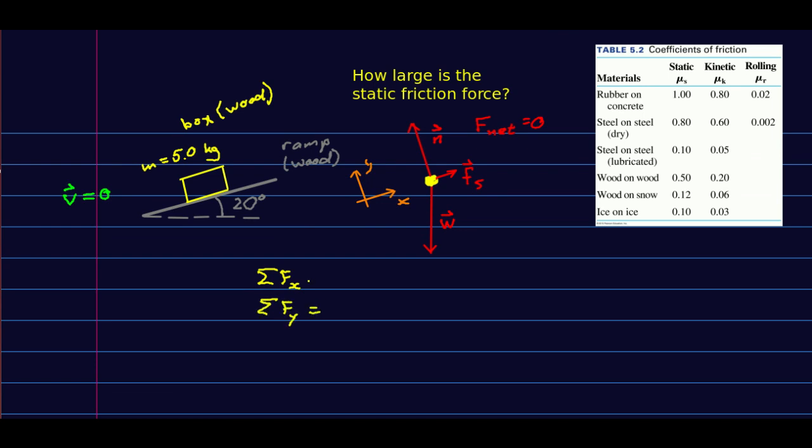And this, again, will go much as it did before, except that this is now static friction. And this is now 0. F net is 0. And the y component looks exactly like it did before. And again, it's a good idea to count your unknowns. We don't know the normal or the static friction. But we do know all of this, including sine and cos of 20 degrees.